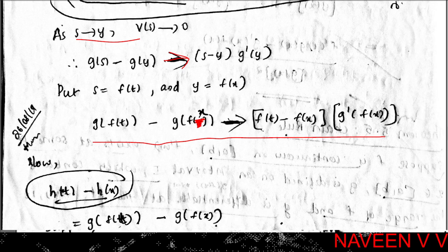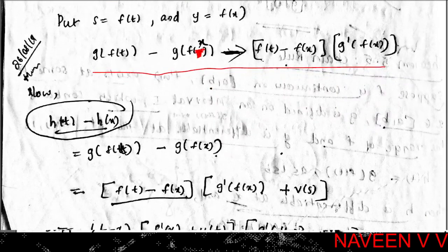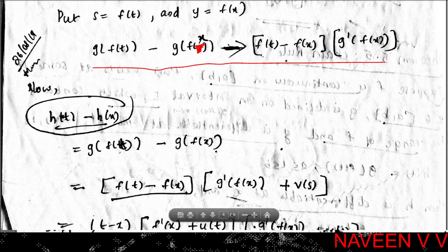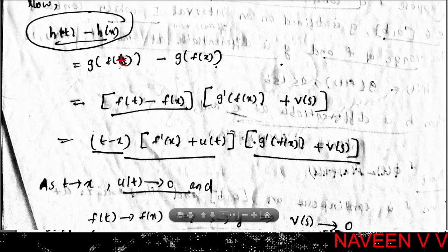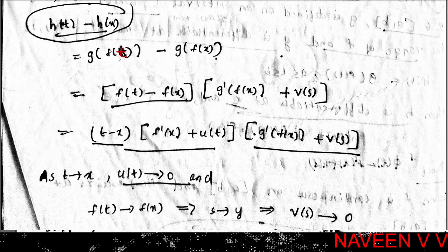Since h = g∘f, we have h(t) - h(x) = g(f(t)) - g(f(x)). Replacing f(t) - f(x) with (t - x)·f'(x) + u(t)·(t - x): h(t) - h(x) = [(t - x)·f'(x) + u(t)·(t - x)]·g'(f(x)) + v(s). So h(t) - h(x) = (t - x)·[f'(x) + u(t)]·g'(f(x)) + v(s).